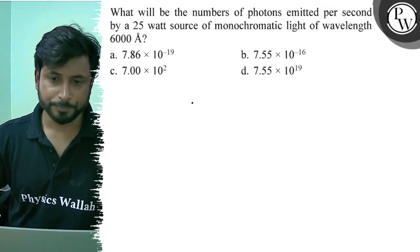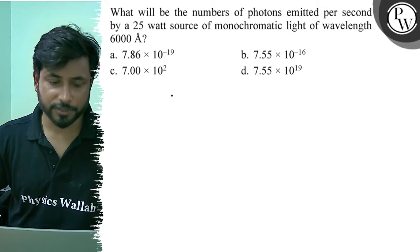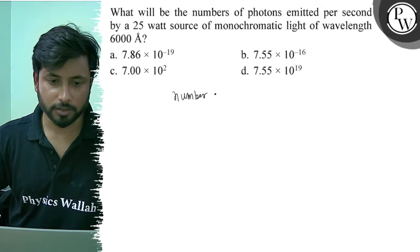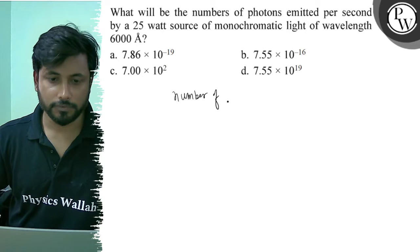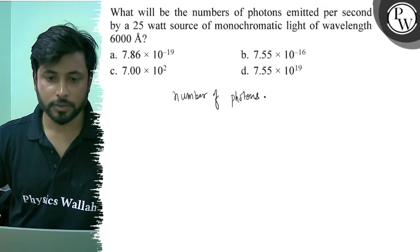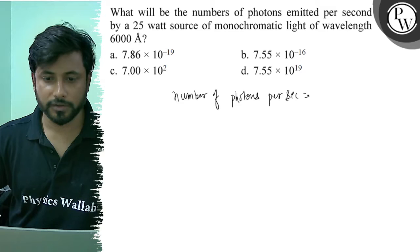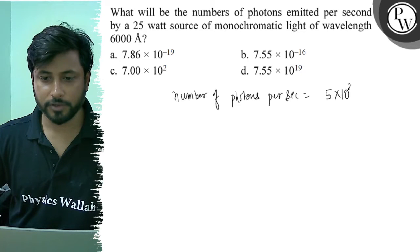Number of photons emitted per second - the formula is 5 into 10 to the power 24 into power into lambda.